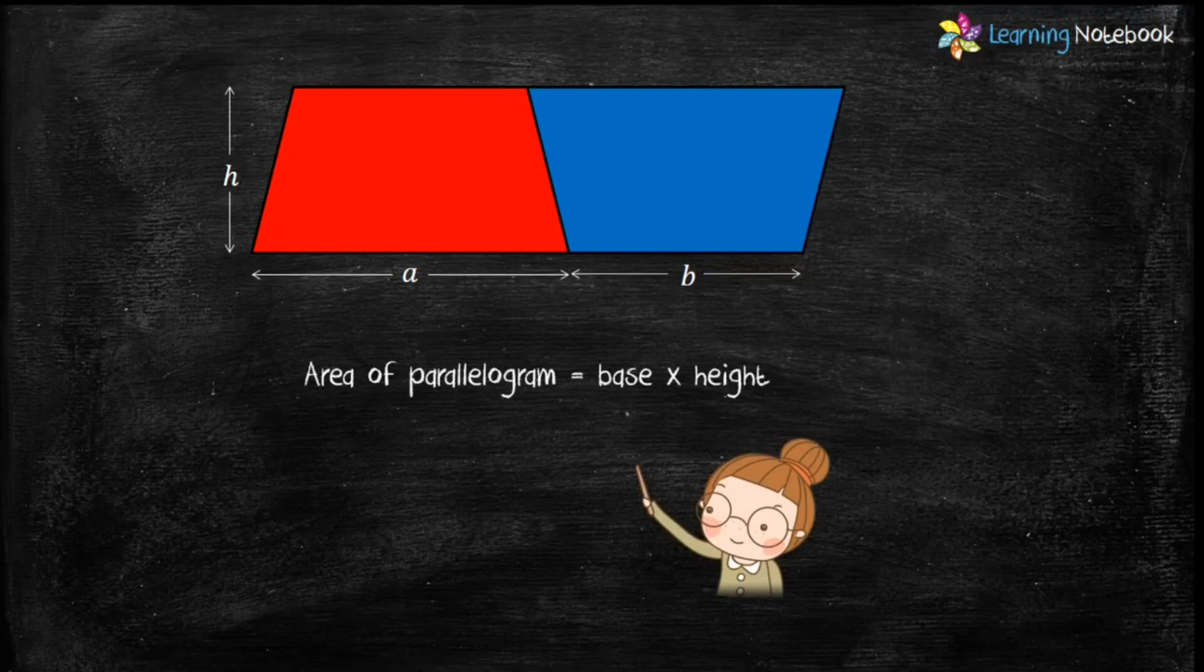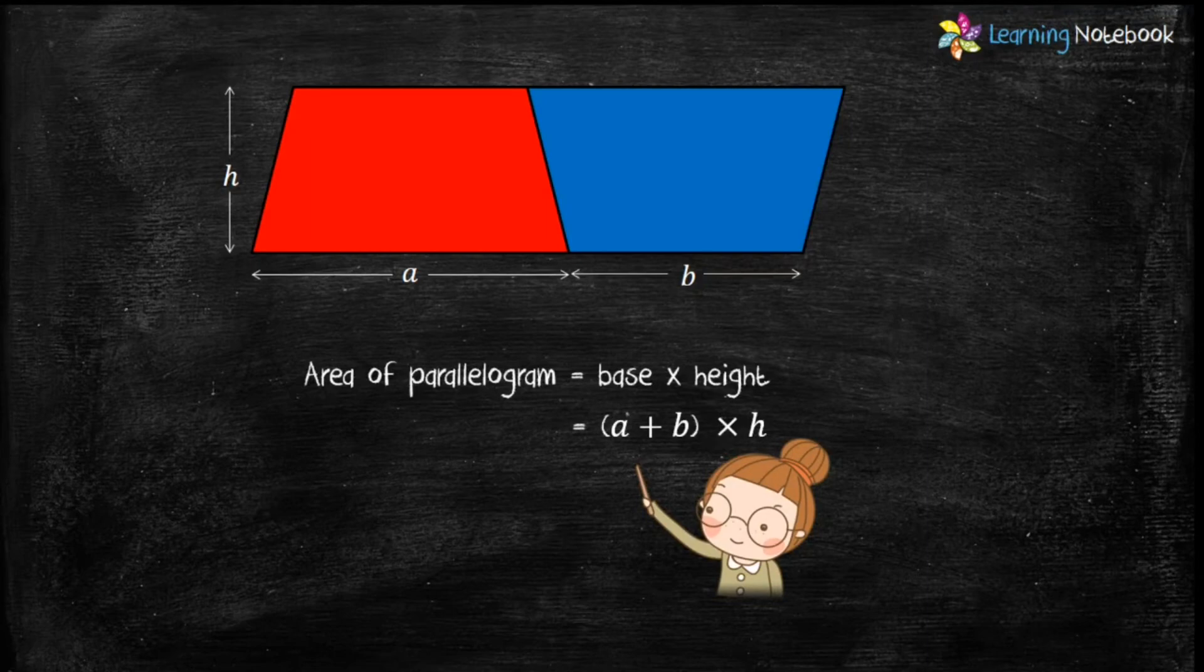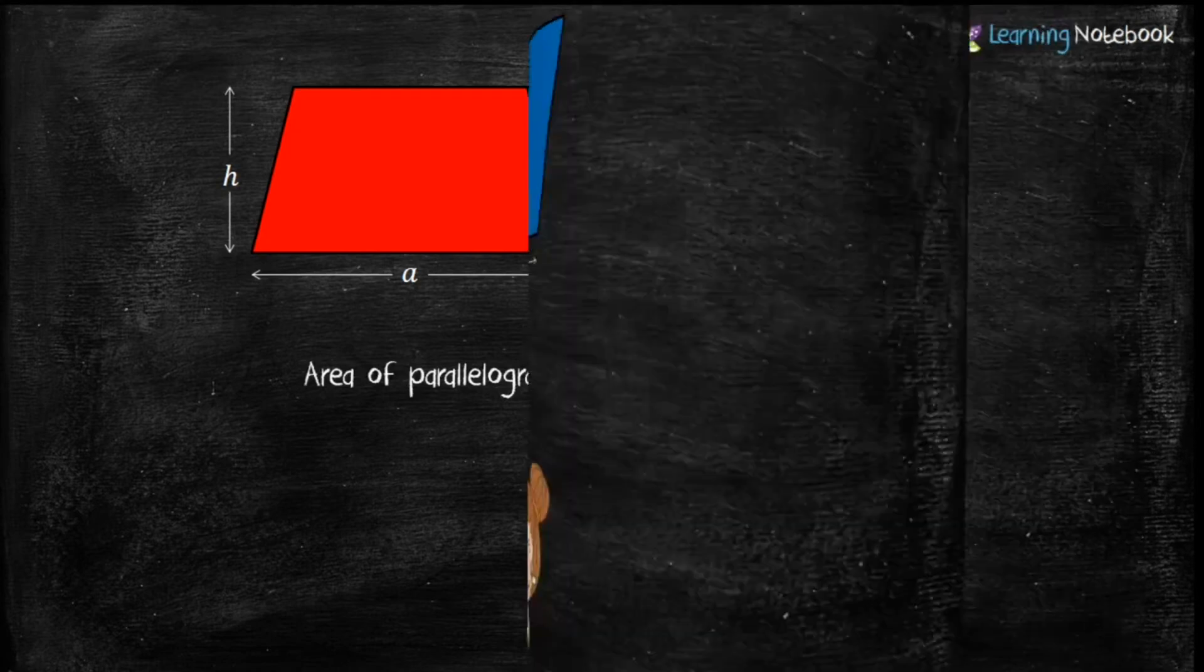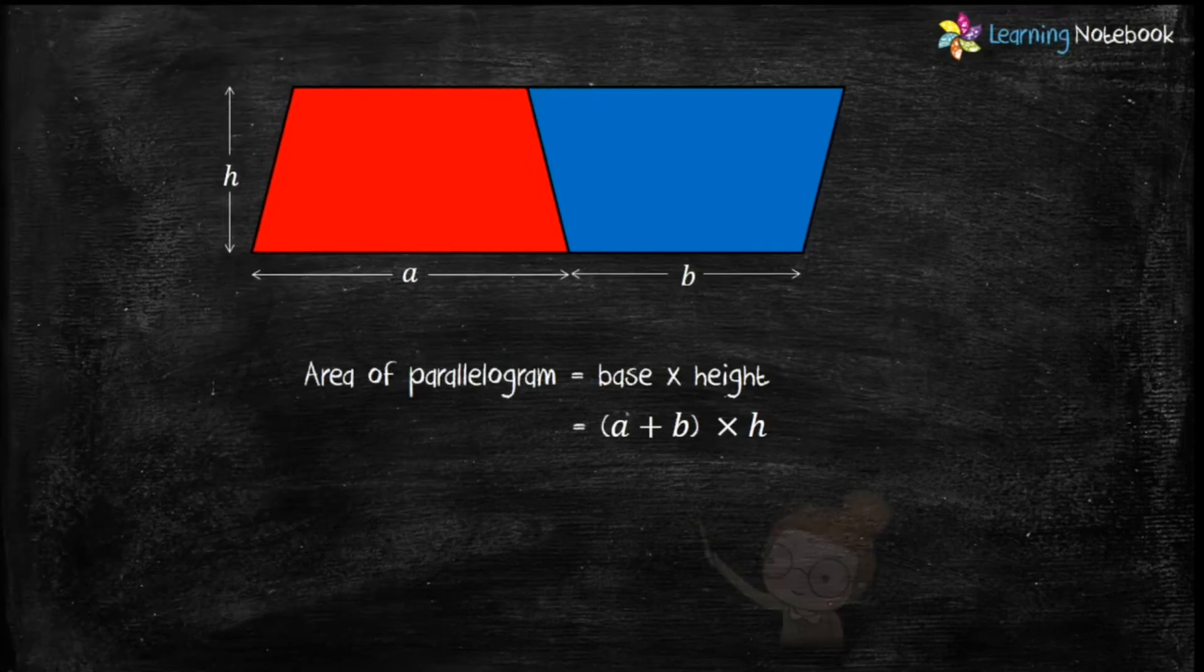Therefore, we can say area of this parallelogram equals (a + b) × h. Students, do you remember we made two identical trapeziums? So their areas would be the same. Therefore, we can say area of this parallelogram equals the area of two trapeziums.